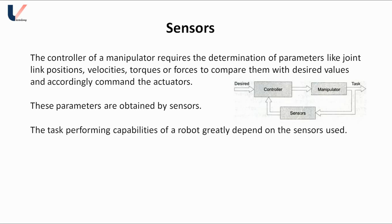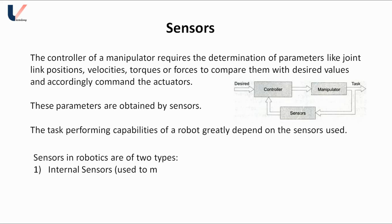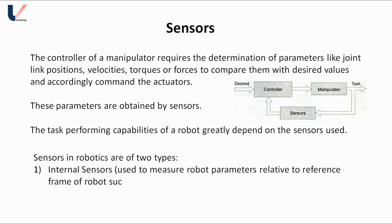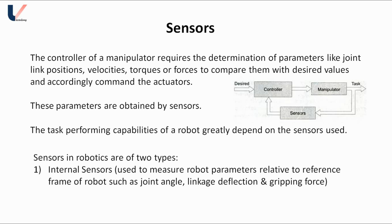Sensors in robotics are of two types. Number one: internal sensors. Internal sensors are used to measure robot parameters relative to the reference frame of the robot. The parameters measured by internal sensors can be joint angle, linkage deflection, and gripping force.